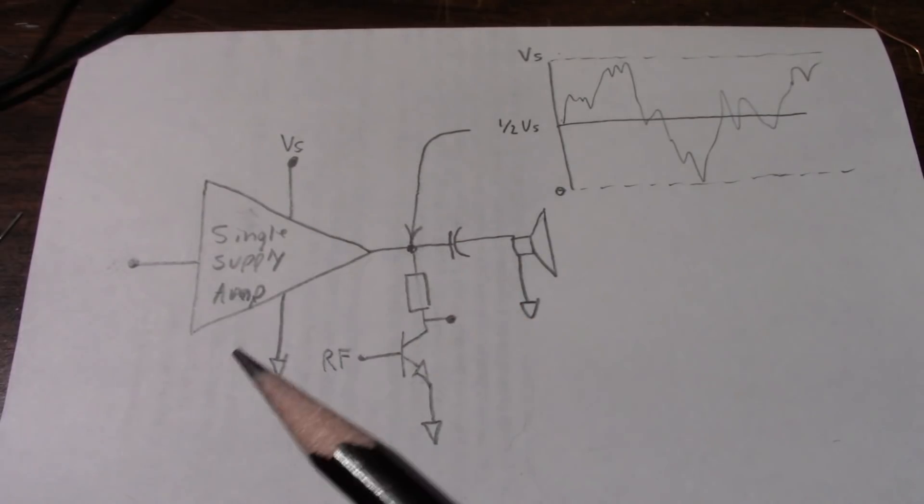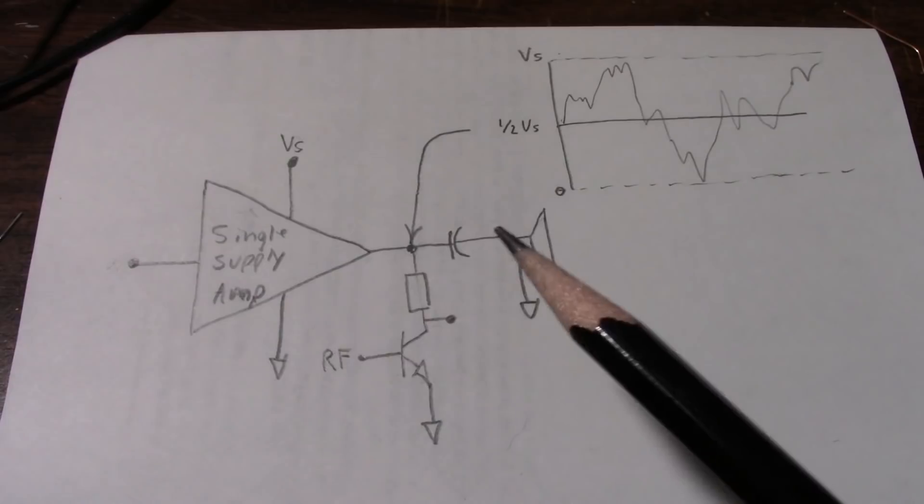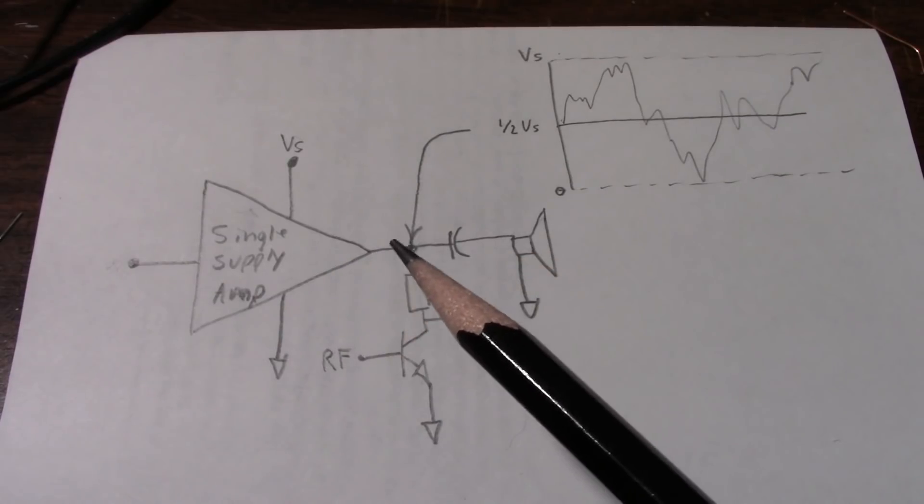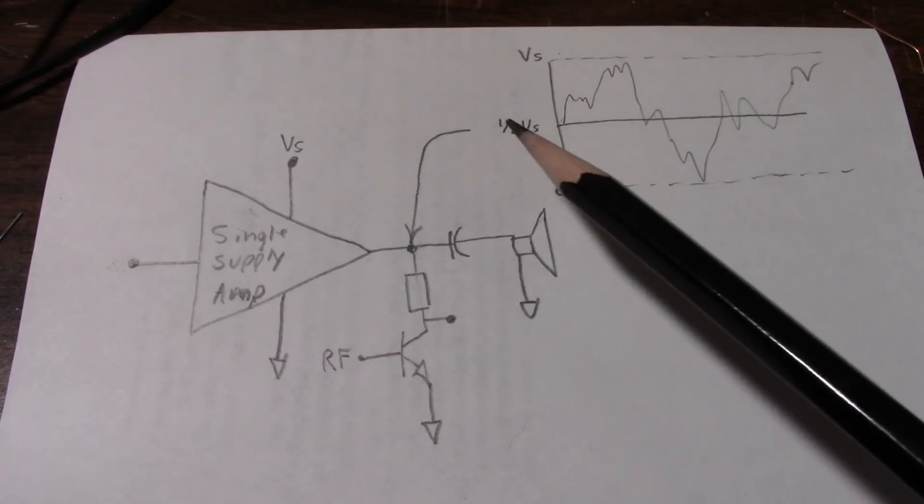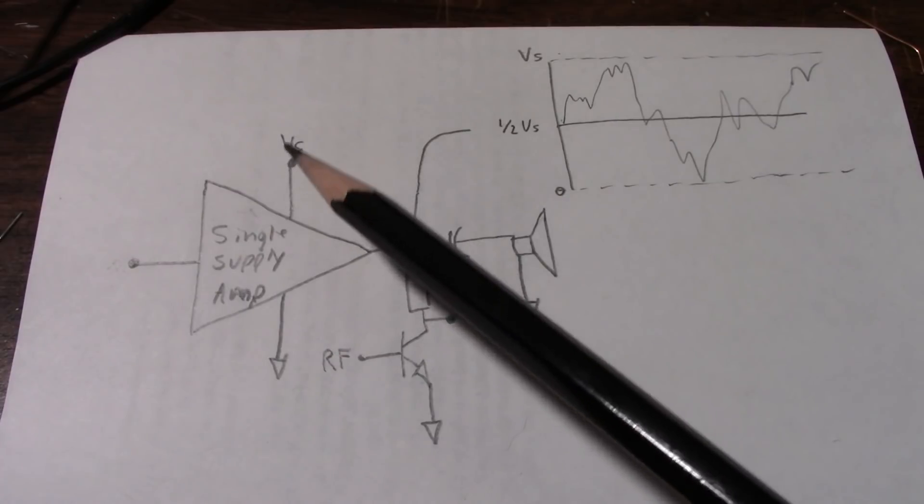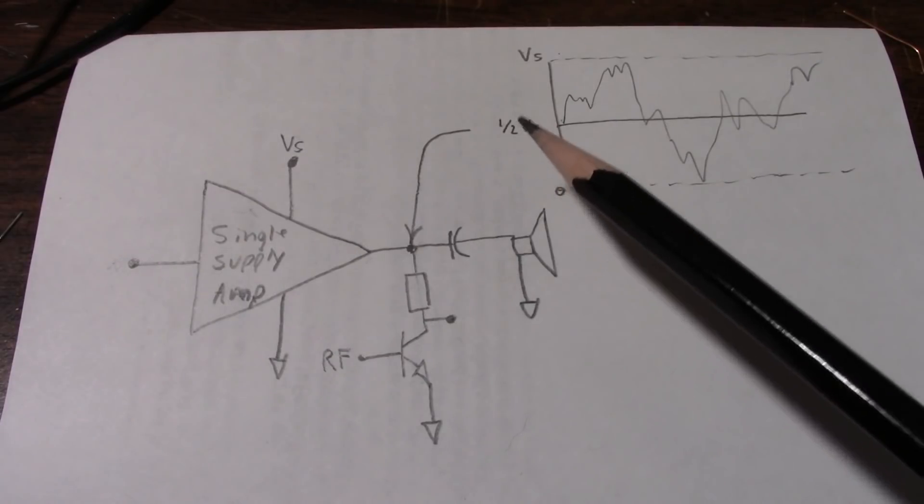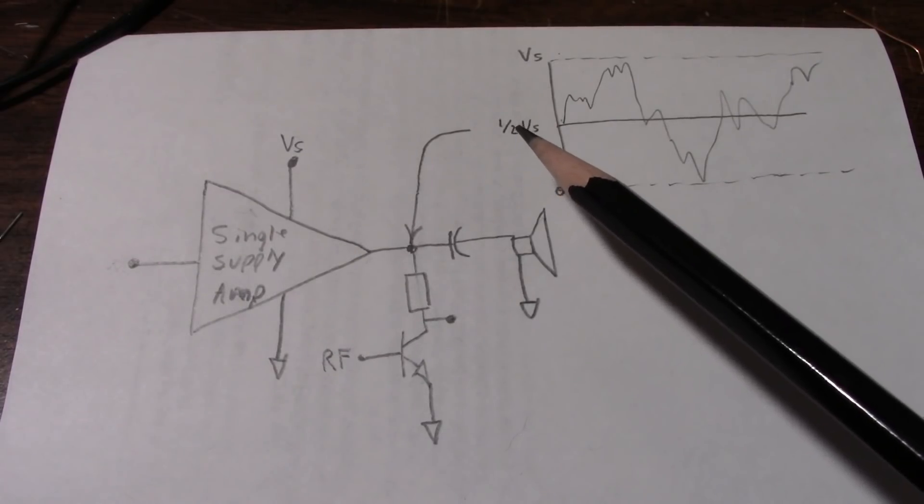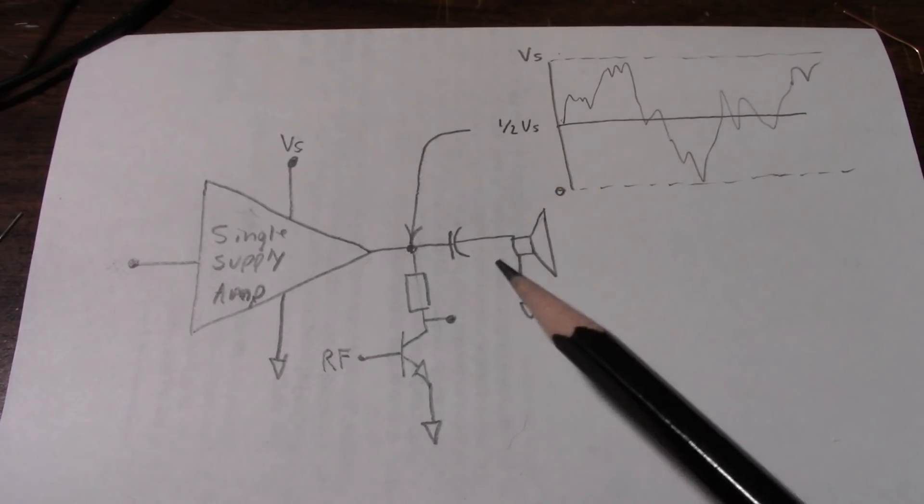One attribute of a single supply amplifier, if you measure the voltage at its output pin before the capacitor, you'll notice that the idle voltage will be about one half the supply voltage. So if we had 9 volts supply, this voltage would be around 4.5 volts.